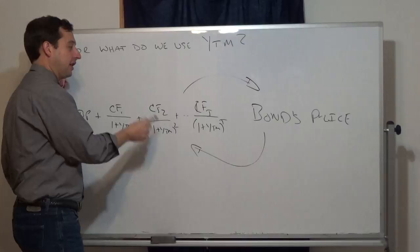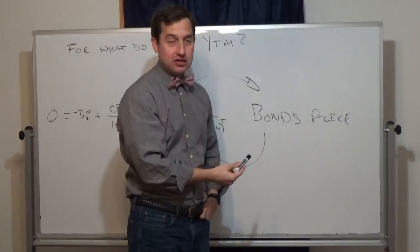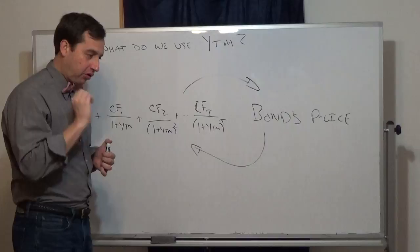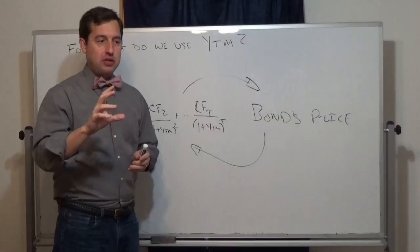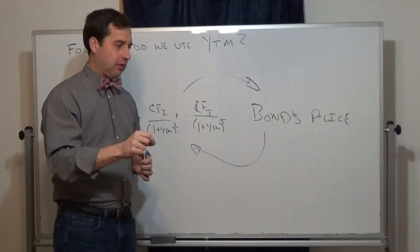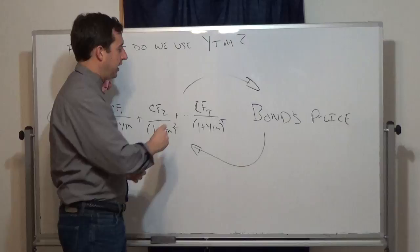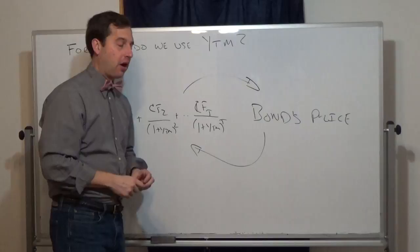For a given maturity, there are many different bond prices, but all those prices imply the same yield to maturity. That's why I can quote one yield to maturity for one-year Treasuries, one for five-year, ten-year, and thirty-year — every maturity has one yield to maturity even though bond prices vary widely. So instead of quoting price, we quote yield to maturity, which tells you how much you'll earn on the bond. I'll have another brief video on whether you're actually guaranteed to earn that yield.